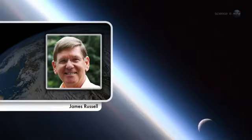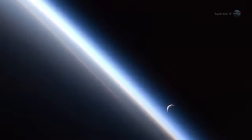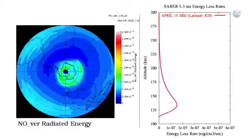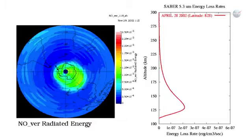Carbon dioxide and nitric oxide are natural thermostats, explains James Russell of Hampton University, SABR's Principal Investigator. When the upper atmosphere, or thermosphere, heats up, these molecules try as hard as they can to shed that heat back into space.